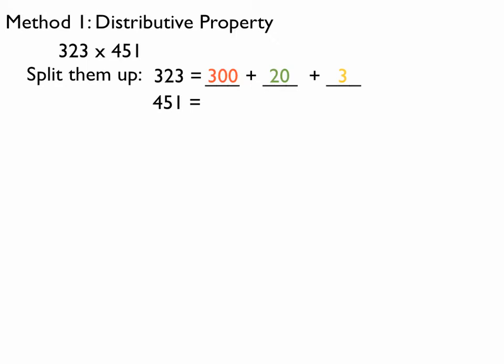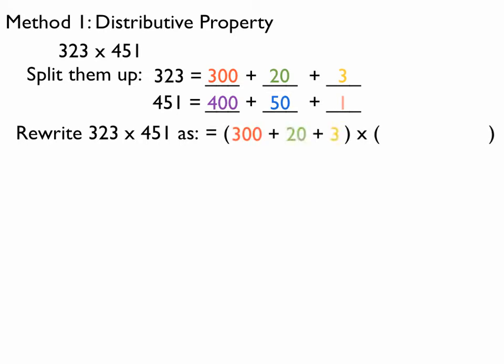I'm going to do the same thing for 451. Three bits, it's going to be 400, 50, and 1. So, I'm going to rewrite this as, again, right here, I've got my parentheses: 300 plus 20 plus 3 times 400 plus 50 plus 1.